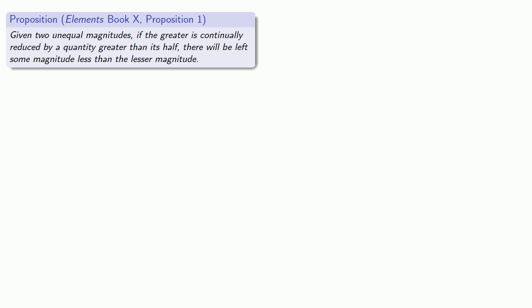And Euclid provides this in Book 10, Proposition 1. Given two unequal magnitudes, if the greater is continually reduced by a quantity greater than its half, there will be left some magnitude less than the lesser magnitude.